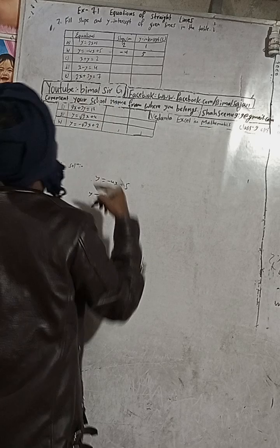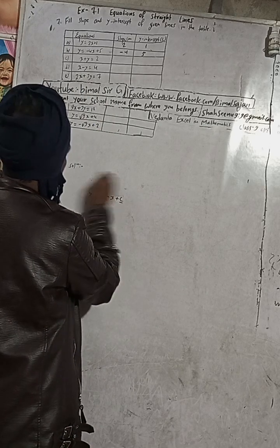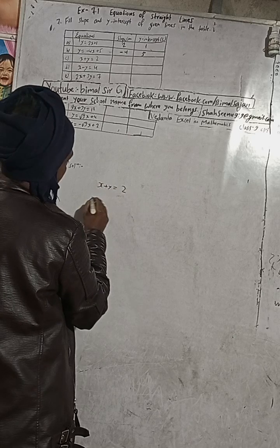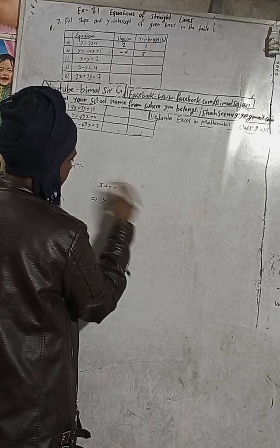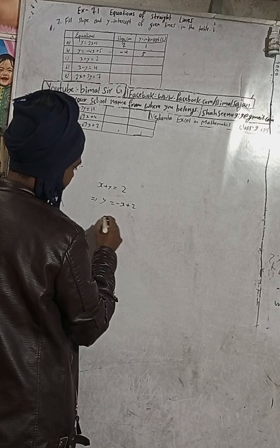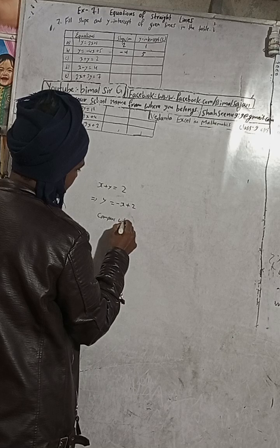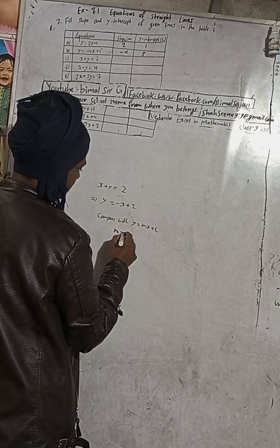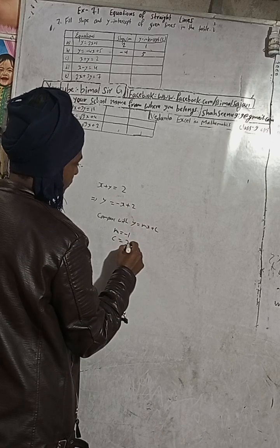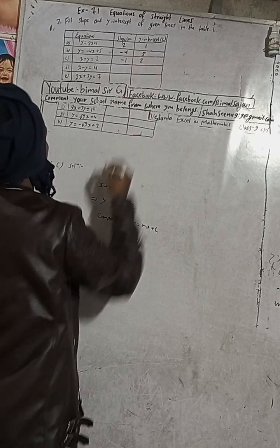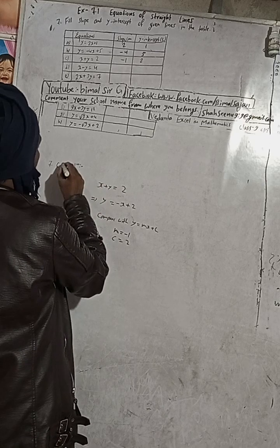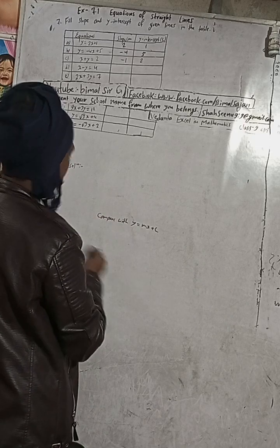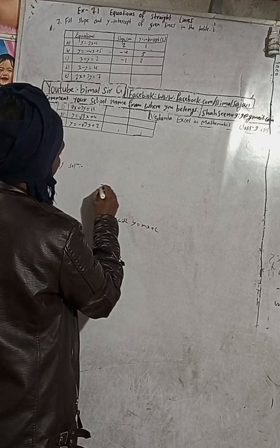Part (c): The equation is x + y = 2. First, rearrange it to make y the subject. Rearranging gives y = -x + 2. Comparing with y = mx + c, in place of m there is -1, so slope m = -1, and c = 2.